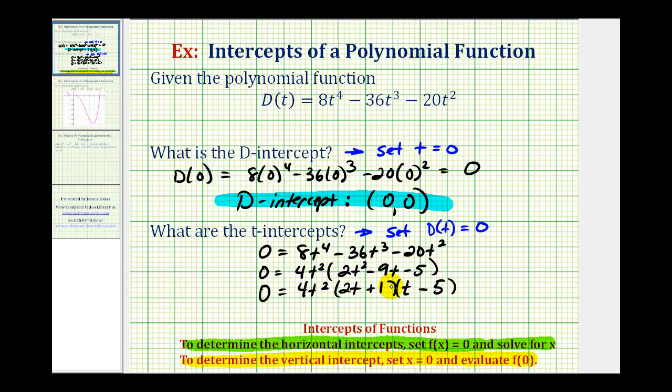Now we set each factor equal to zero and solve for t. We can see t = 0 from these factors. If we set 2t + 1 = 0, subtract 1, then divide by 2, we have t = -1/2.